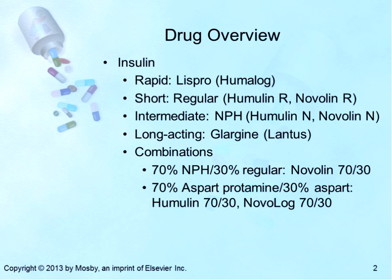There are many types of insulins, including rapid-acting insulin such as Lispro or Humalog; short-acting regular insulin such as Humulin Regular or Novolog Regular; intermediate-acting NPH; and long-acting such as Lantus. Combinations include 70% NPH and 30% regular.